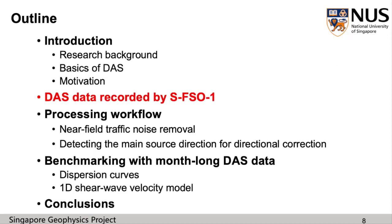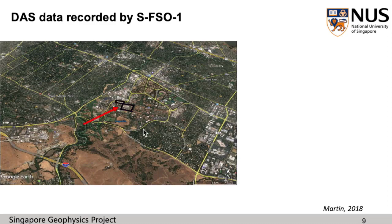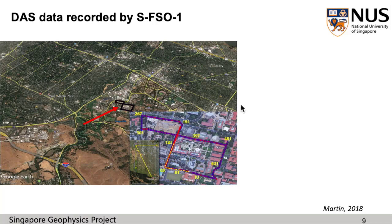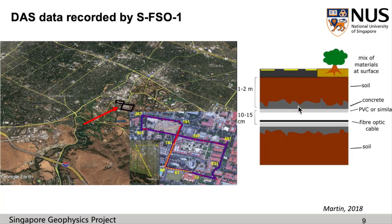The second part is the DAS data I have been working on — the DAS data recorded by the Stanford DAS array. This is the location of the Stanford DAS array. The yellow curves represent the roads, and the traffic noise from each of these roads had a contribution to the recorded DAS data. The optical fiber cable was deployed in a PVC conduit about 1 to 2 meters below the surface, only relying on gravity and friction. In this project, we only process the data recorded by the fiber cable labeled by the red line, since the results obtained from month-long DAS data have been published and we can use them as benchmark. We use the data recorded by the fiber cable labeled by the yellow dashed line to detect the propagation direction of the main source.